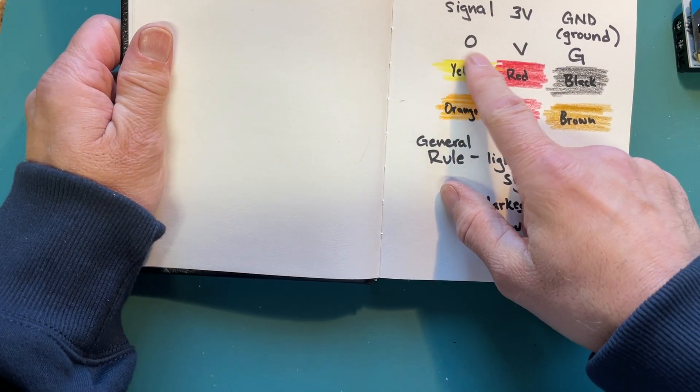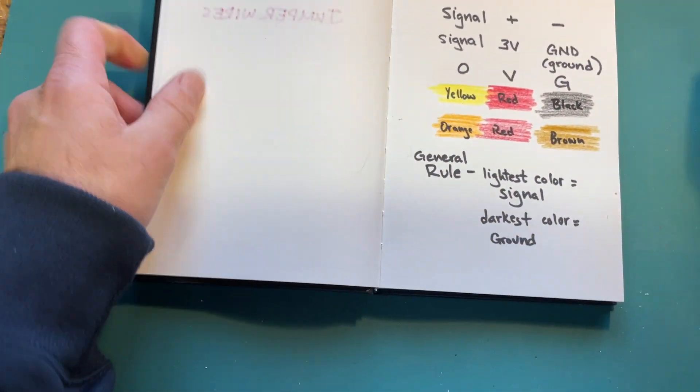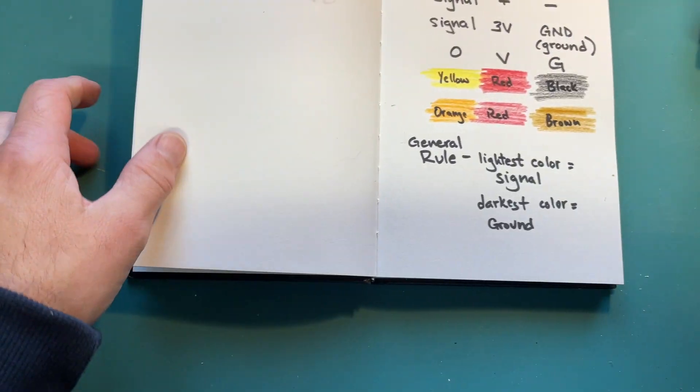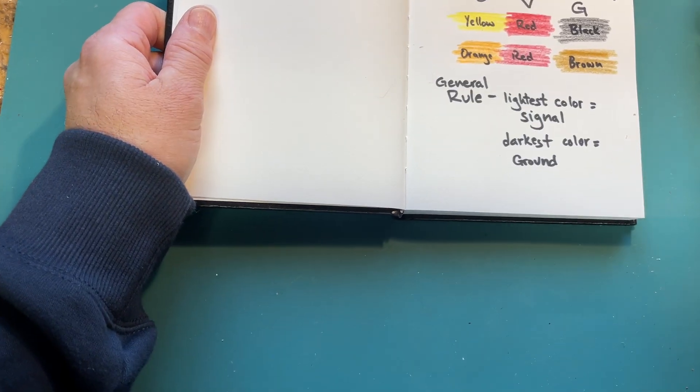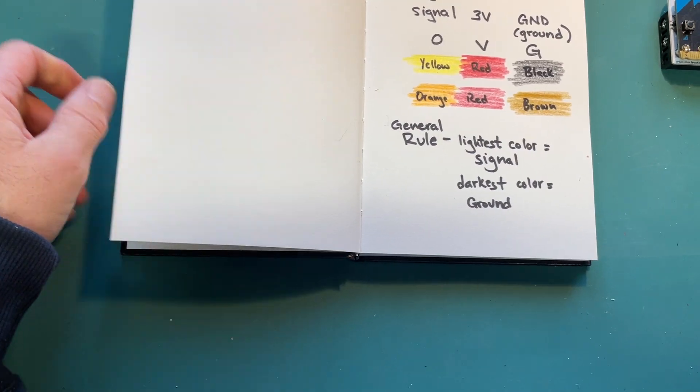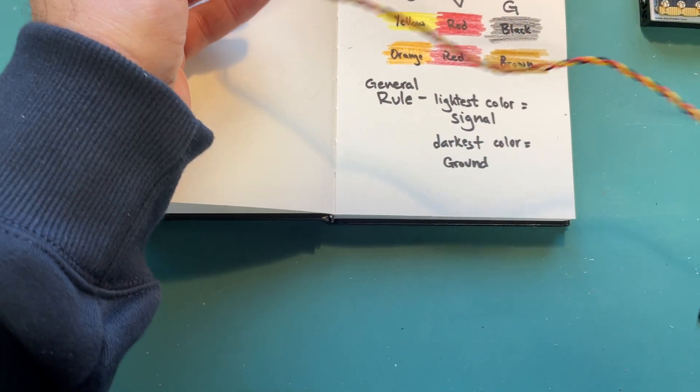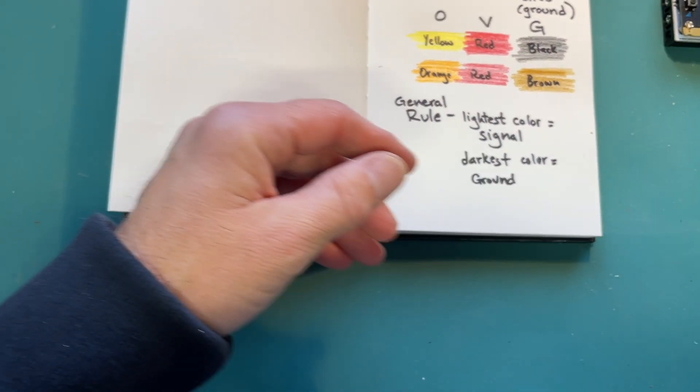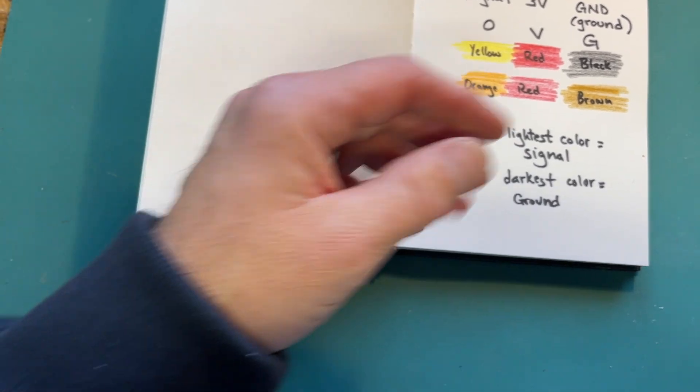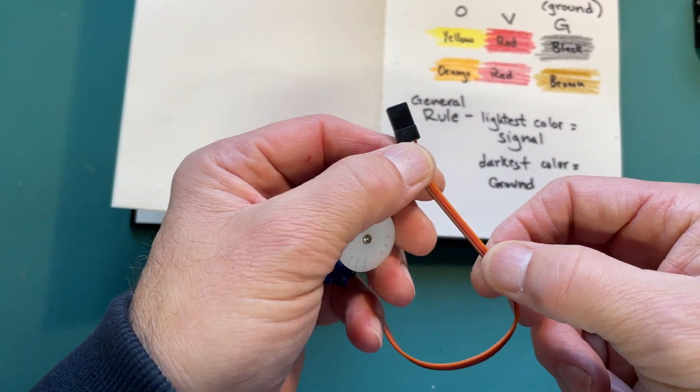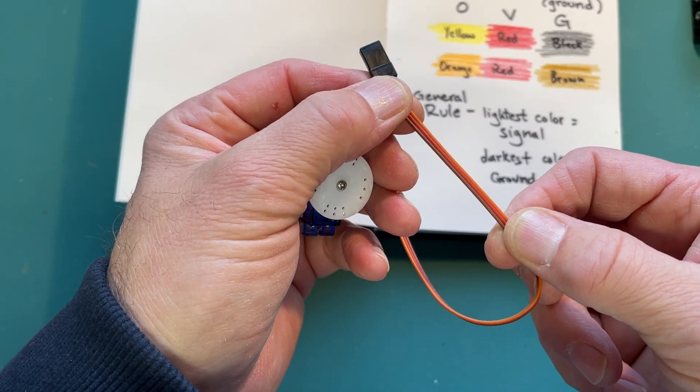And they're also different colors. So as you saw on here, this one is yellow, red, and black for signal, voltage, and ground. On the servo it is orange, red, and brown. Still signal, voltage, ground.